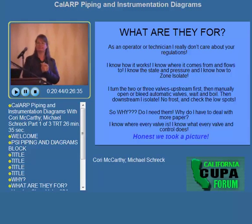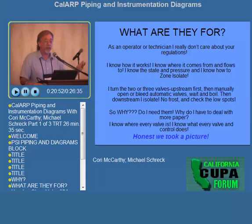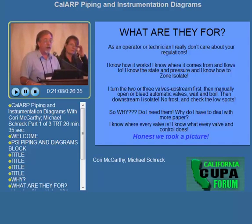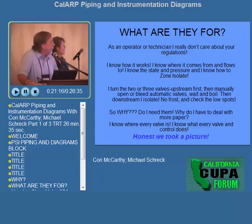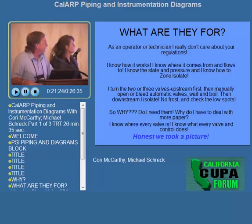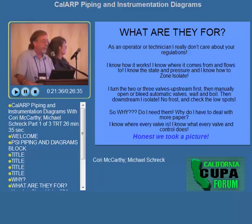A typical end-user attitude is: 'I was an owner and operator. I don't care about regulations. All I have to do is keep it cold, make it work, and keep my job. I don't have time for paperwork. I haven't updated my P&IDs for 30 years.' That's the typical answer. We have to educate them. About 80% of the P&IDs out there are not as-built. The experienced operator may say: 'I know where it comes from, where it flows to, how to zone-isolate every piece of equipment, and the state and pressure — so why do I need the additional paperwork?'